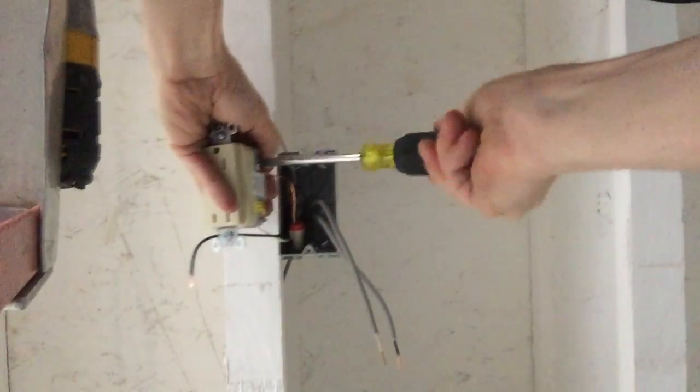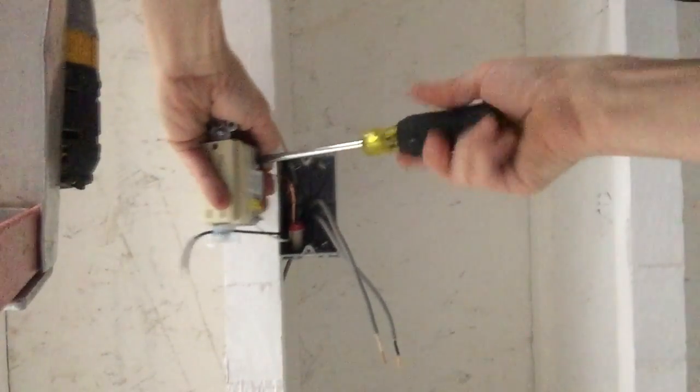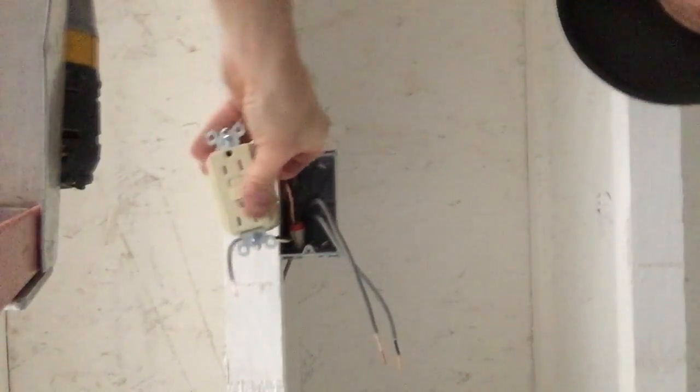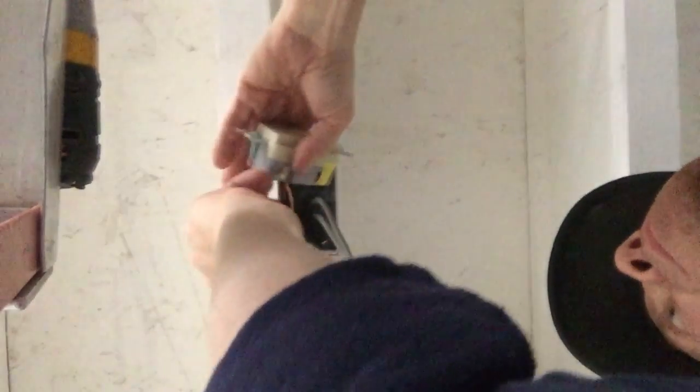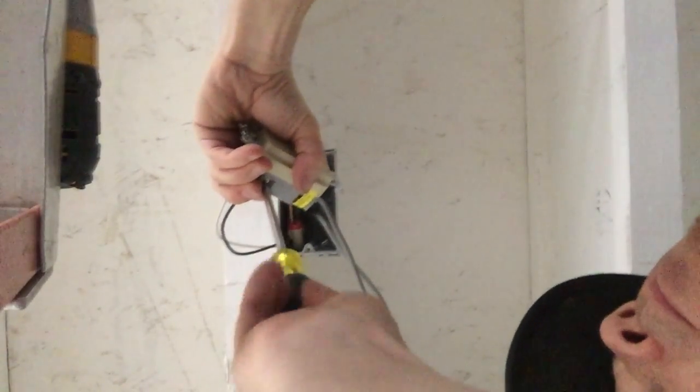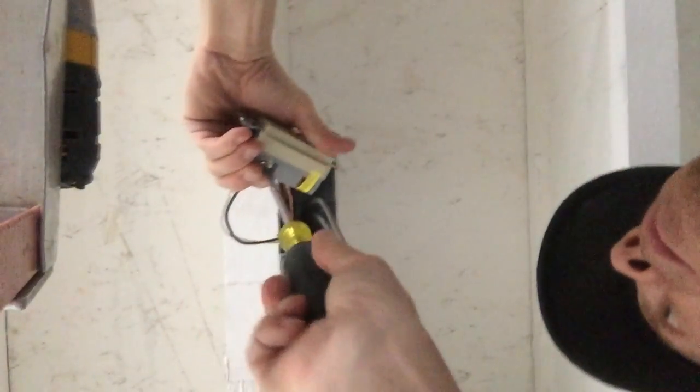One of them is your line voltage which is the one that is actually bringing the power, and then the other one is considered the load. That's the one that might go feed another outlet but will not work unless the line is connected. So you're going to connect the line separately from the load.